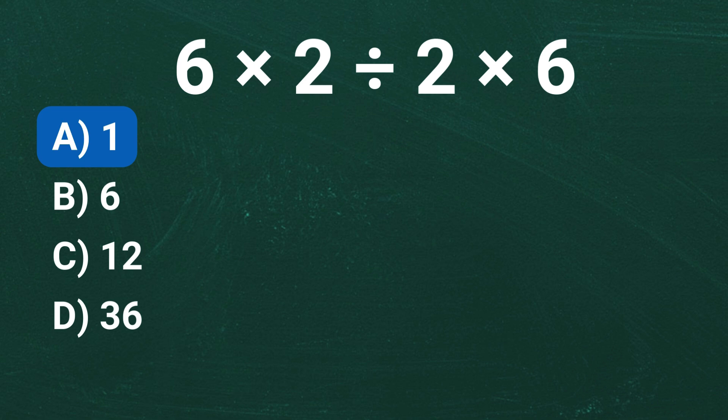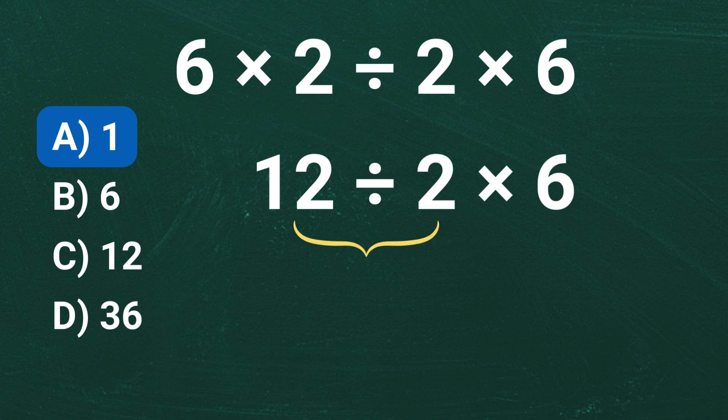On the other hand, some people might approach it like this. They start by multiplying 6 times 2 which equals 12. Then, they divide. 12 divided by 2 which equals 6. And finally, they multiply. 6 times 6 which equals 36.